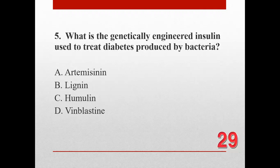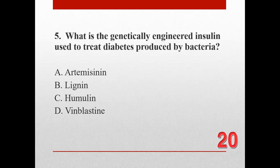Number five. What is the genetically engineered insulin used to treat diabetes, produced by bacteria? A. Artemisinin, B. Lignin, C. Humulin, and D. Vinblastin.